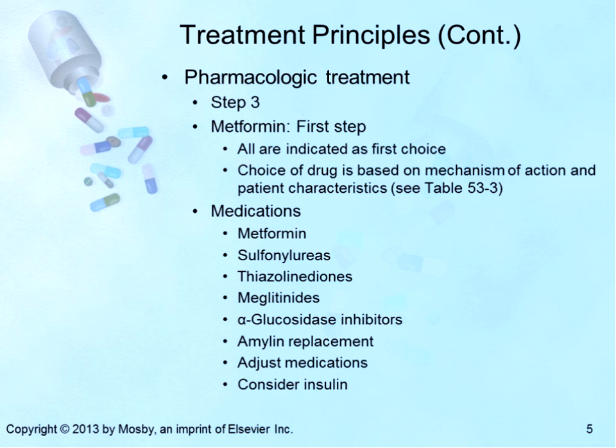For pharmacological treatment, the first step is to administer metformin. The choice of drug is based on the mechanism of action and the patient's characteristics. Traditionally, sulfonylureas were the first choice, but metformin is now used as the first-line choice. The sulfonylureas, DPP-4 inhibitors, meglitinides, and alpha-glucosidase inhibitors generally are used as second-line treatments. Effective diabetes management requires attention to all metabolic defects associated with the disease, often requiring the use of more than one drug to target each metabolic defect.